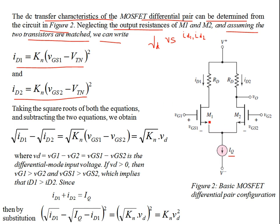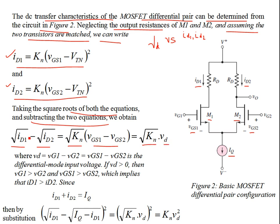Here VD = VG1 − VG2 = VGS1 − VGS2, since the sources of M1 and M2 are connected together at the same potential. This is the differential mode input voltage. If VD > 0, then VG1 > VG2, meaning VGS1 > VGS2, which implies ID1 > ID2. For identical transistors, if VGS1 equals VGS2 the drain currents are equal; if VGS1 is greater, ID1 is greater than ID2.